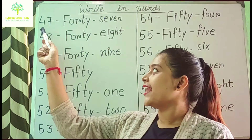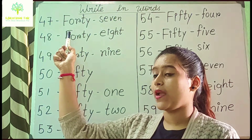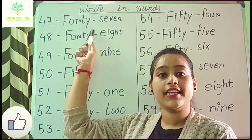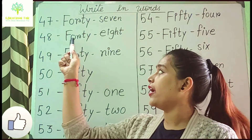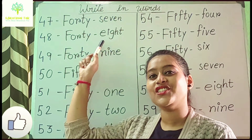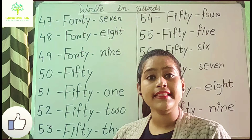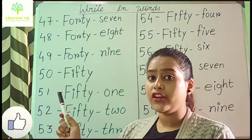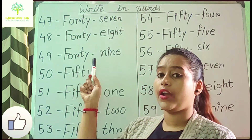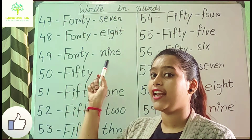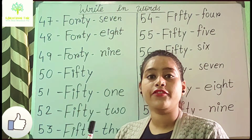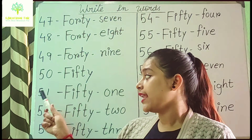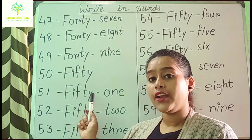For 46, F-O-R-T-Y then 6 is S-I-X. For 47, first write 40 spelling F-O-R-T-Y, then 7 is S-E-V-E-N. For 48, F-O-R-T-Y then 8 is E-I-G-H-T. For 49, F-O-R-T-Y then 9 is N-I-N-E. For 50, the spelling is F-I-F-T-Y.